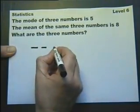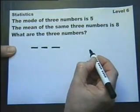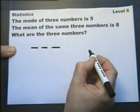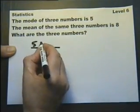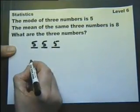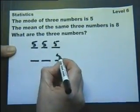If you've got three numbers and the mode is 5, there must be more 5s than anything else, because the mode is the most popular. So it's either three 5s or two 5s and something else.